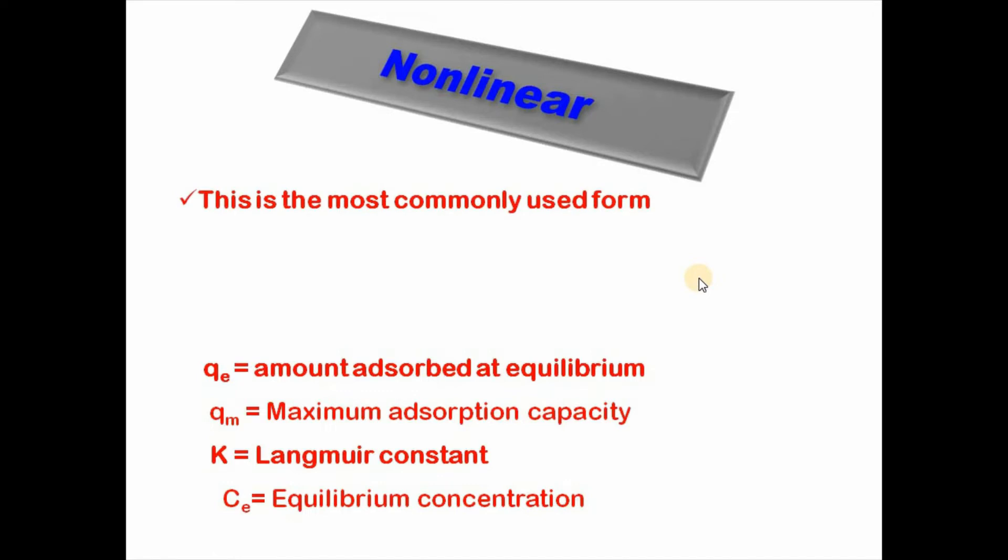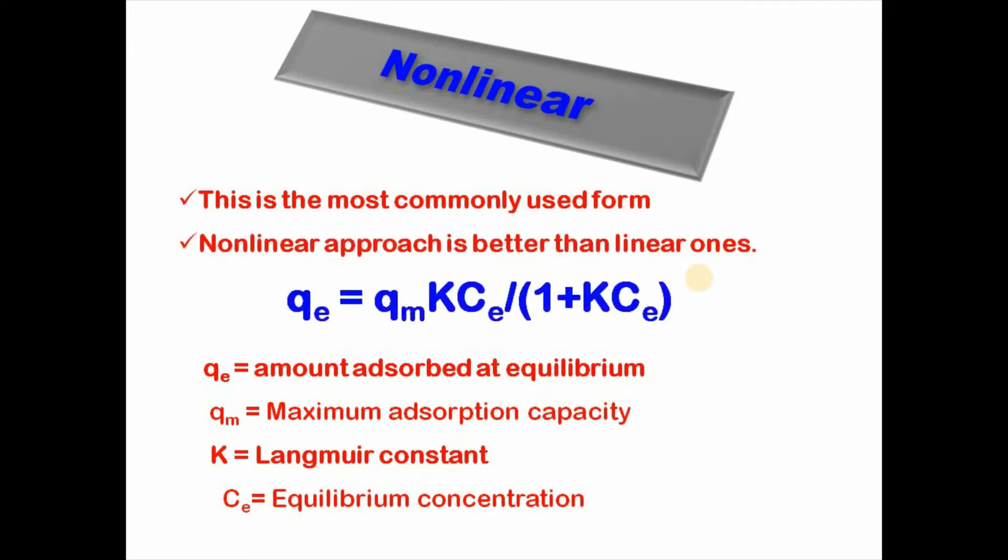Nonlinear Langmuir isotherm is originally derived and it is the most commonly used form. However, it should be remembered that nonlinear approach is better than linear ones. Nonlinear Langmuir isotherm can be written as qe equals qm KC_e divided by 1 plus KC_e, where qe is the amount adsorbed at equilibrium, qm is the maximum adsorption capacity, K is the Langmuir constant, and Ce is the equilibrium concentration.